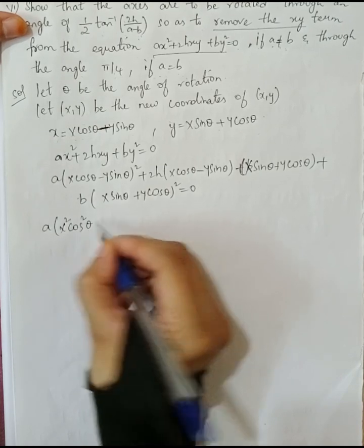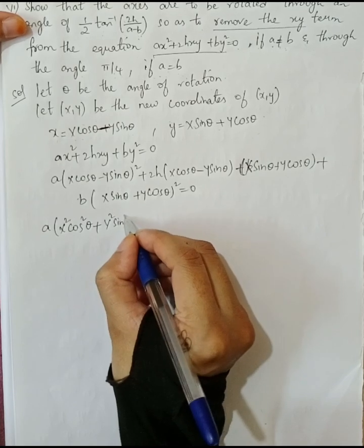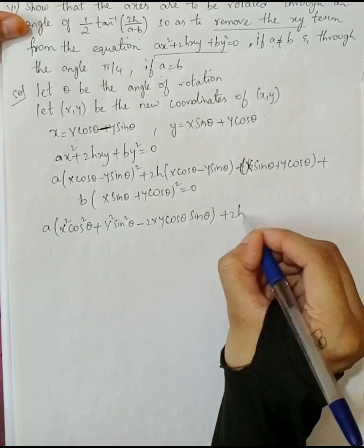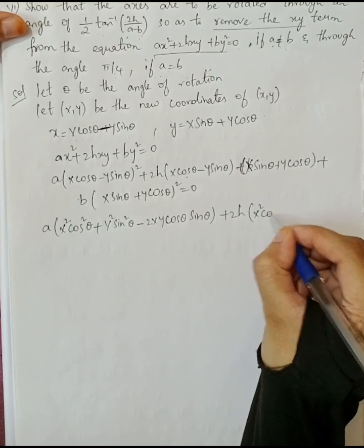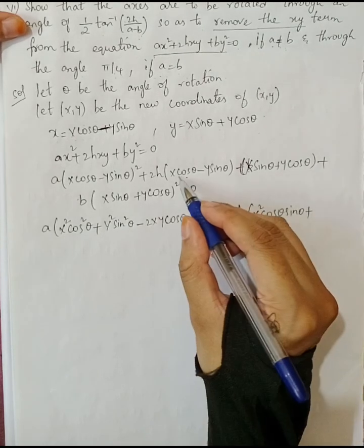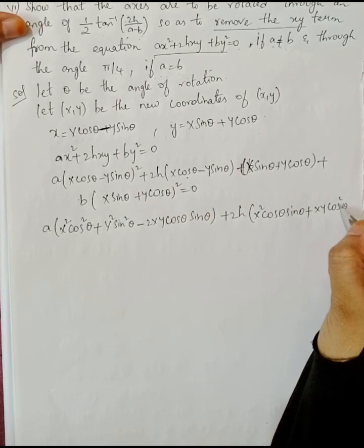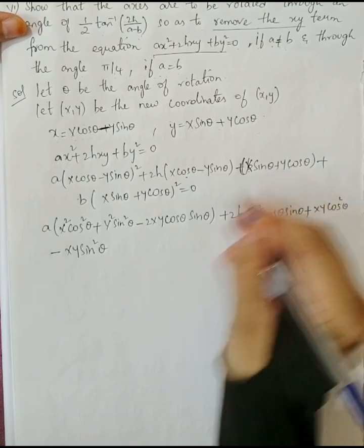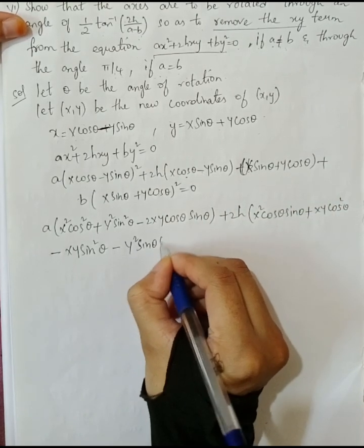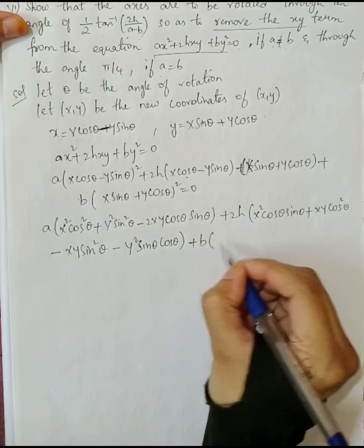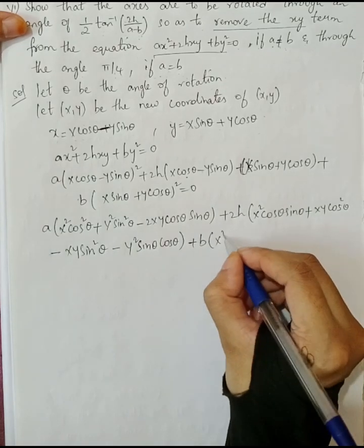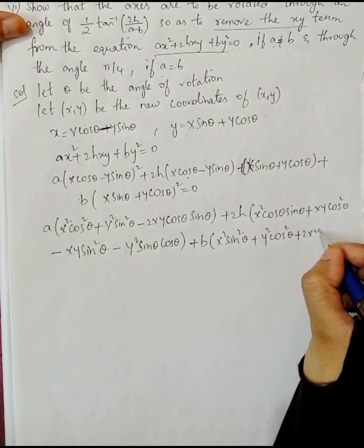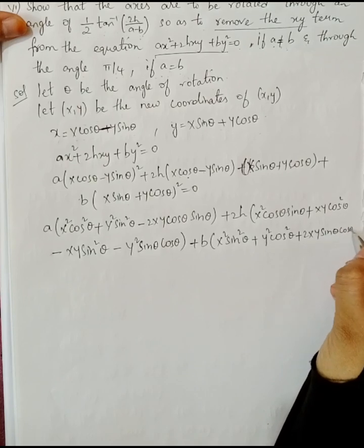Expanding: a into (X squared cos squared theta plus Y squared sin squared theta minus 2XY cos theta sin theta), plus 2h into (X squared cos theta sin theta plus XY cos squared theta minus XY sin squared theta plus Y squared sin theta cos theta), plus b into (X squared sin squared theta plus Y squared cos squared theta plus 2XY sin theta cos theta), equals 0.